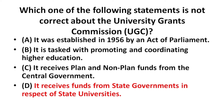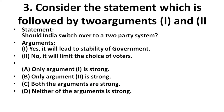The next question is: consider the statement followed by two arguments. The statement is: Should India switch over to a two-party system? Argument one: Yes, it will lead to the stability of the government. Argument two: No, bargaining power will be debilitated. Both arguments are strong, so the answer is C — both arguments are strong.